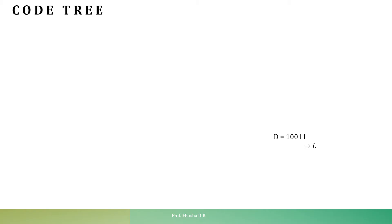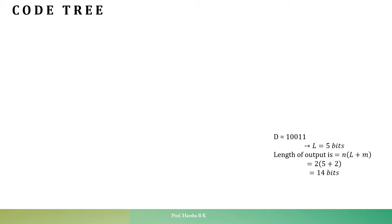The message d is equal to 10011, which needs to be encoded. This implies the length of the given message is 5 bits. The length of the encoded sequence will be equal to n times (l plus m). From the encoding circuit, n is equal to 2 and m is also equal to 2. This results in the length of the output sequence being equal to 14 bits. So for the given 5-bit message, the length of the encoded sequence will be 14 bits.